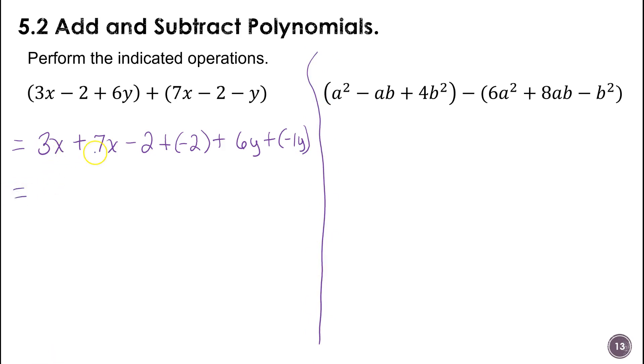On the x's, it's 3 plus 7, so 10x. Negative 2 plus negative 2, so that's going to be a minus 4. And then 6y plus negative 1, 6 and negative 1 would be a 5. And if you would like to write it as 10x plus 5y minus 4, or leave it the way you have it, it's fine either way.